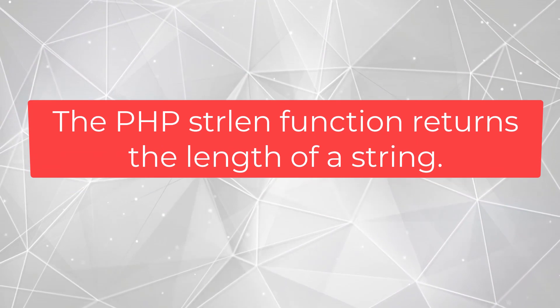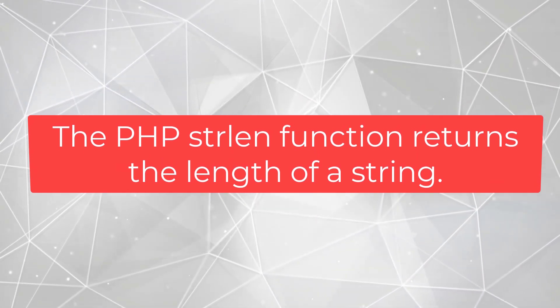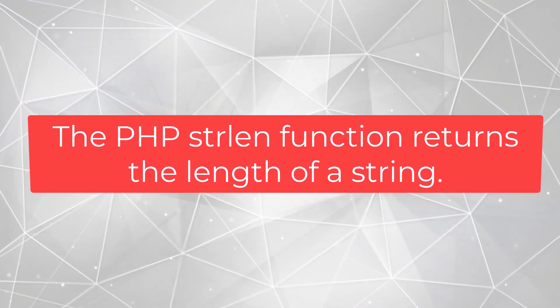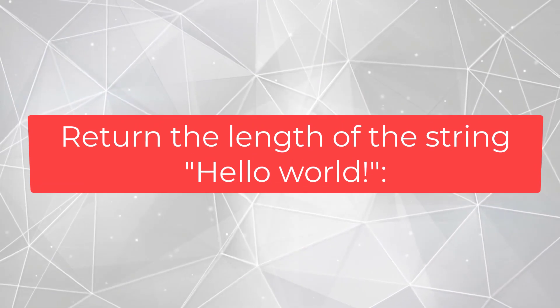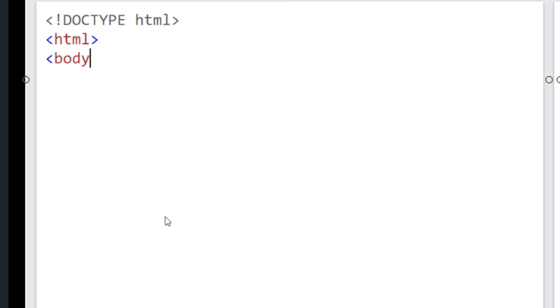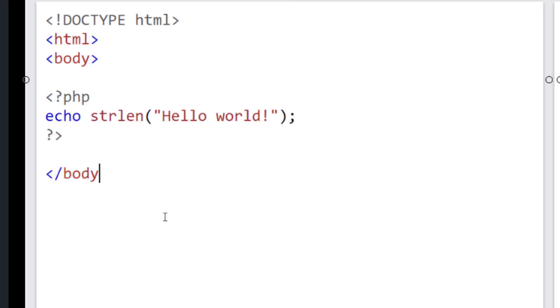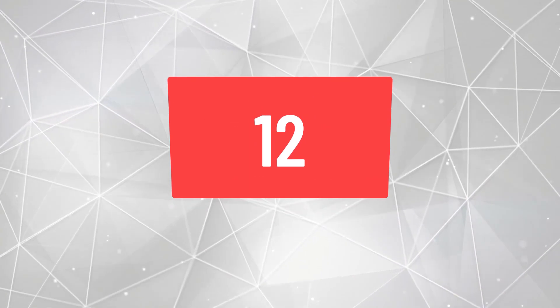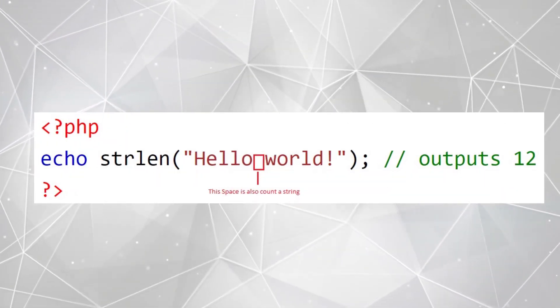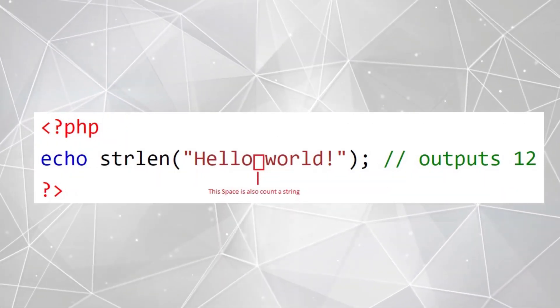The PHP strlen function returns the length of a string. Example: return the length of the string Hello World. The output will be 12. The space between Hello and World is also counted as a character in the string.